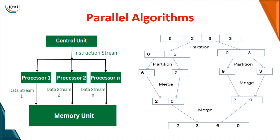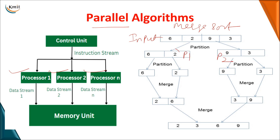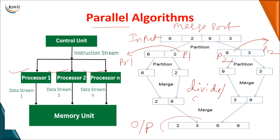Coming to parallel algorithms: if you are executing a program on a single machine you call that a serial or sequential algorithm. If you execute the same problem on multiple processors — processor one, processor two, processor three — you design a parallel algorithm. Using the merge sort example, the input is divided into two partitions, each executed on a different processor, and ultimately combined into a single output. The pattern followed is divide and conquer.